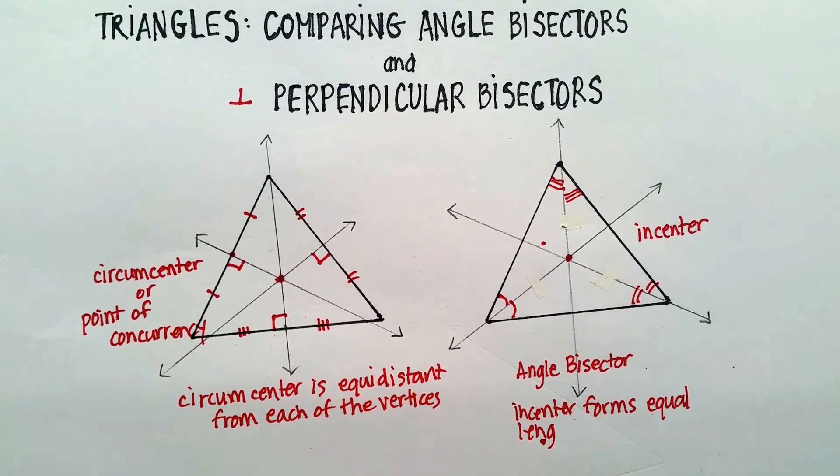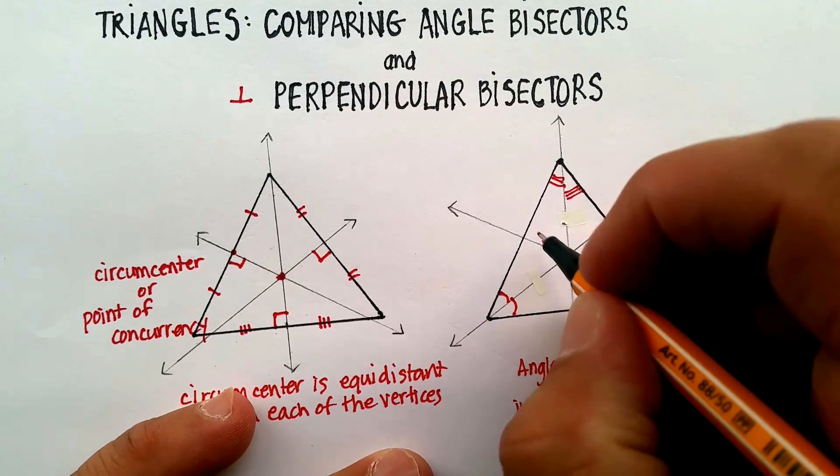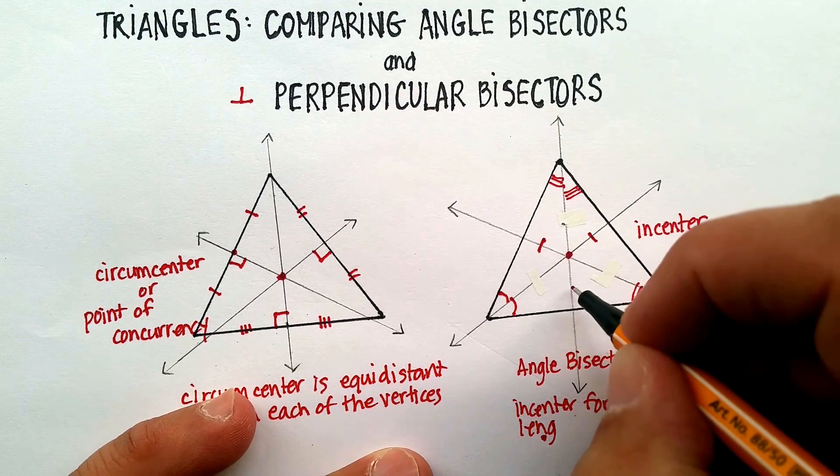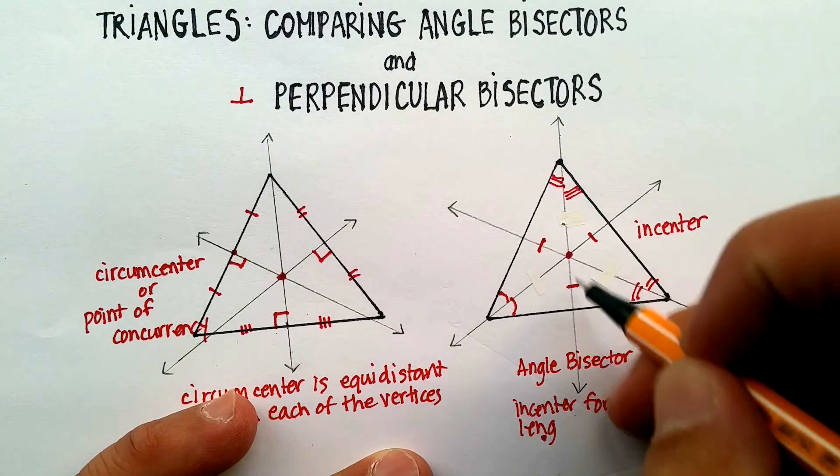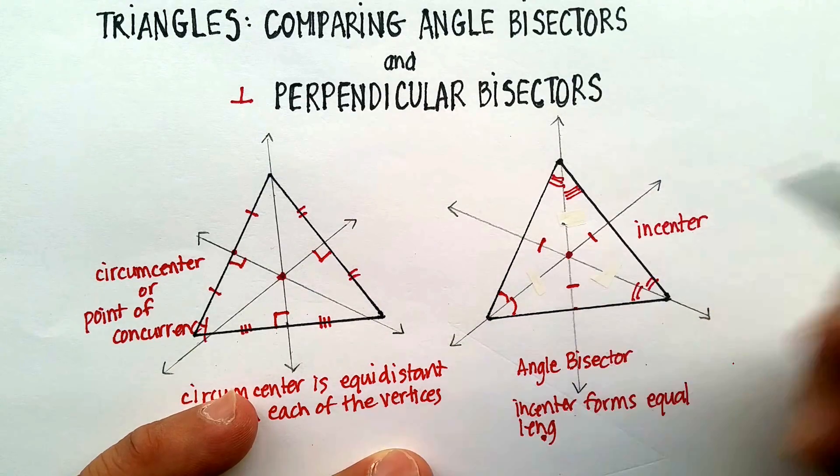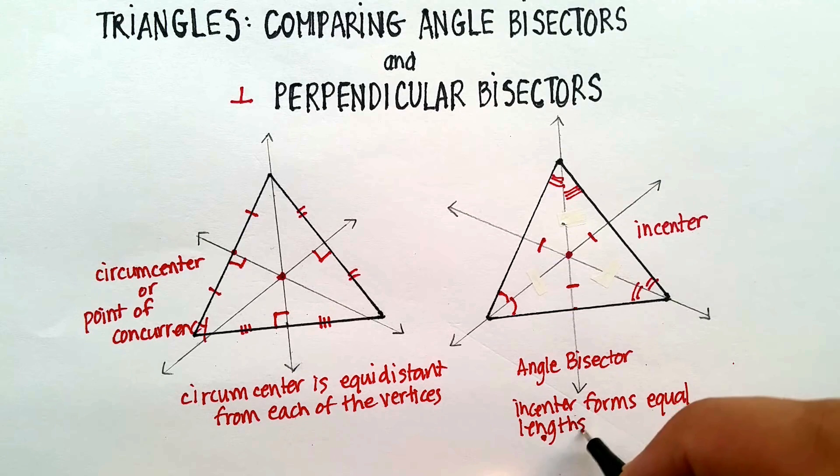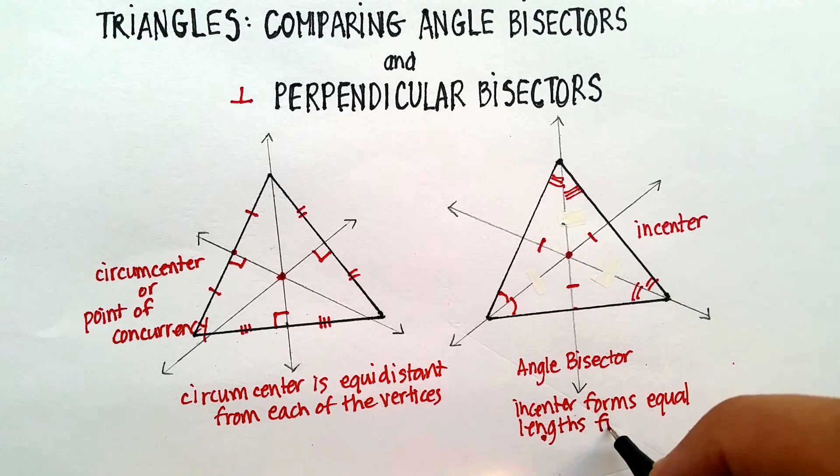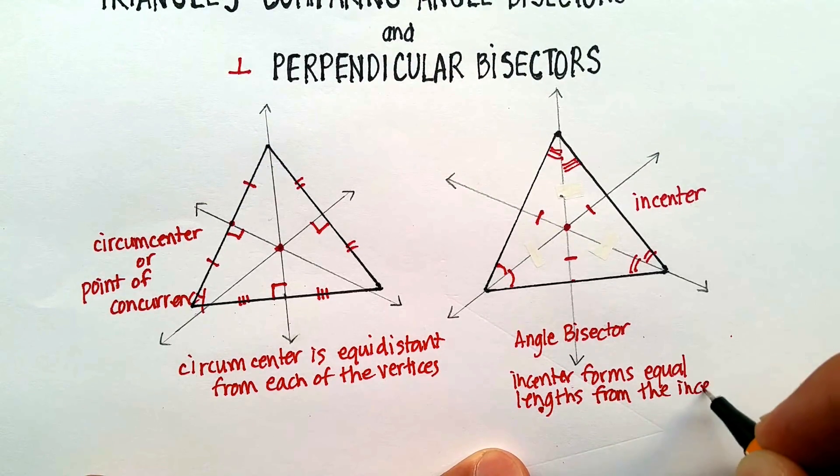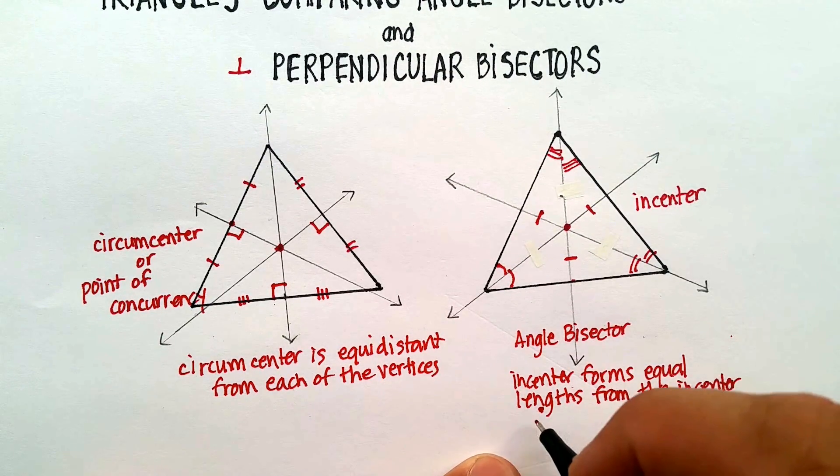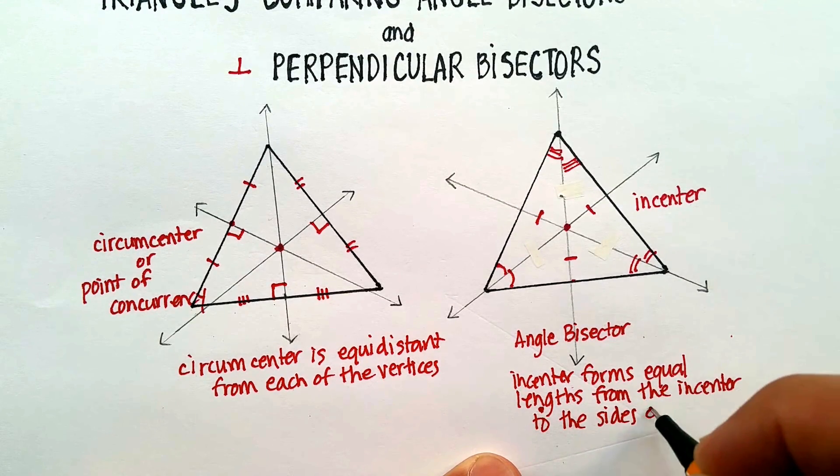Easy mistake to make. Okay, so, the in-center is equally distant from each of the sides of the triangle. So, this length here is equal to this length here is equal to that length there. So, the in-center forms equal lengths from the in-center to the sides of the triangle.